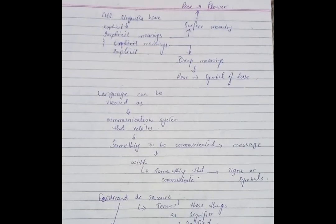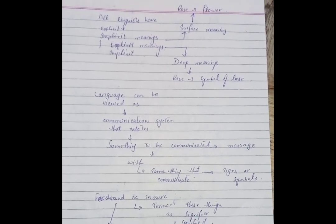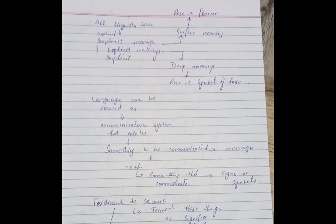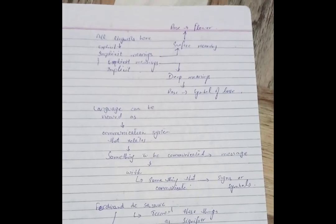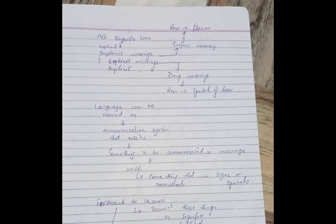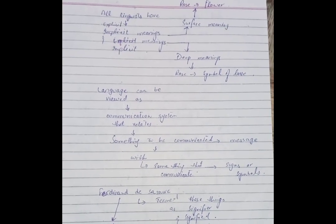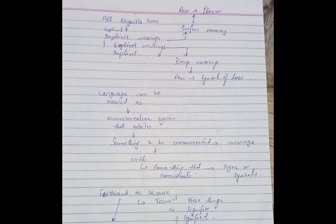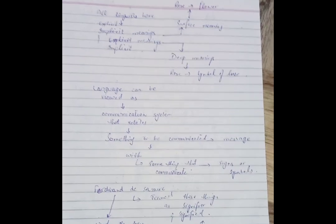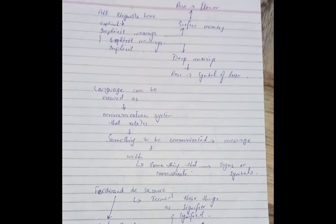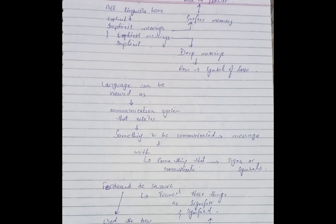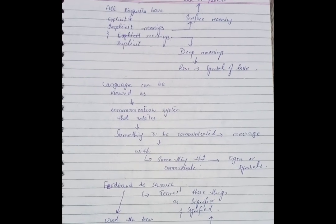Every language has two types of meanings: implicit meanings and explicit meanings. Explicit meanings are the surface meanings — the ordinary word meanings. For example, 'rose is a flower' — that is the explicit meaning. And if we say 'rose is a symbol of love,' then we are dealing with the implicit meaning, which is the deep or symbolical meaning.